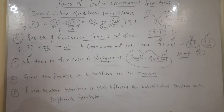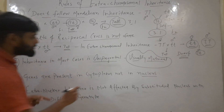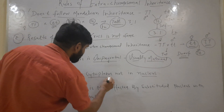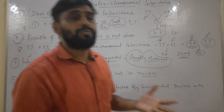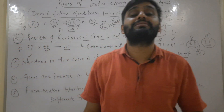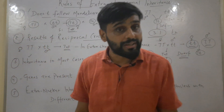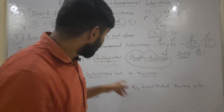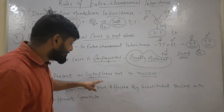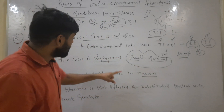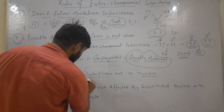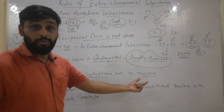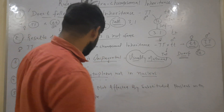The fourth rule is that genes are present in the cytoplasm. In Mendelian inheritance, genes are present inside the nucleus on chromosomes, but in extra-chromosomal inheritance, genes are present in the cytoplasm, not in the nucleus.